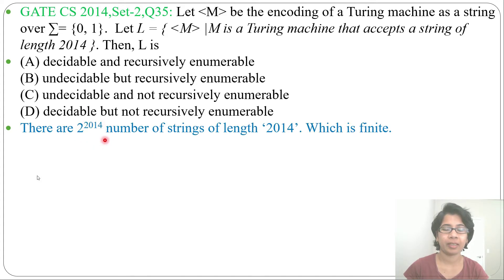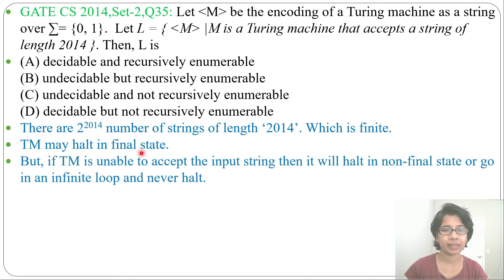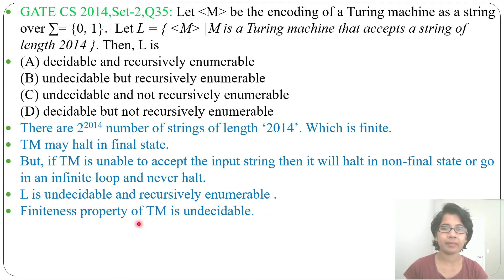And finiteness in case of Turing machine is undecidable. So Turing machine may halt in final state, but it may halt on non-final or go to infinite loop and never halt. L is undecidable as it may go to infinite loop and recursively enumerable. Finiteness property of Turing machine is undecidable.